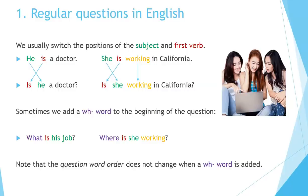Regular Questions in English. To make a question, we usually switch positions of the subject and first verb. For example: 'He is a doctor' becomes 'Is he a doctor?' and 'She is working in California' becomes 'Is she working in California?' Note that only the subject and the first verb change positions; the second verb remains in the same place. Sometimes we add a WH word to the beginning, such as 'What is his job?' or 'Where is she working?' The question word order does not change when a WH word is added.